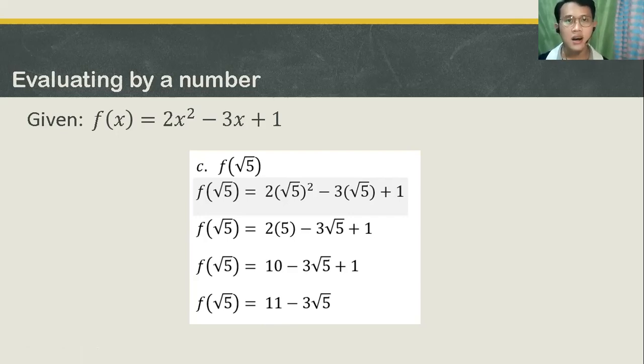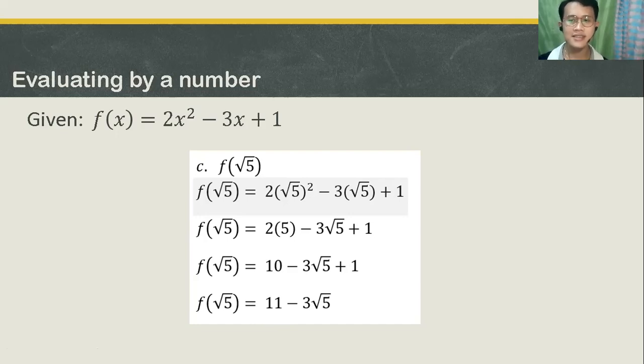Therefore, our f of square root of 5 is equal to 11 minus 3 square root of 5.